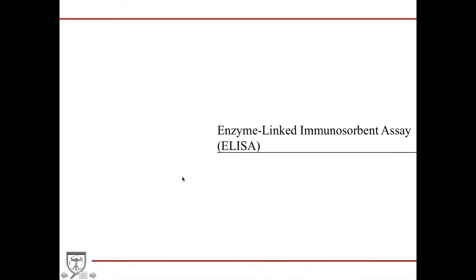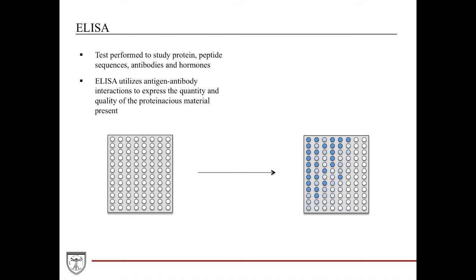The next one I'm going to talk about is enzyme-linked immunosorbent assay or ELISA. This is a very important test because this has a lot of different functions. It's actually used very widely in biochemistry. This test is used to study protein, peptide sequences, antibodies, hormones, pretty much anything that is almost peptide or protein in base. Because it uses the concept of antibodies, antigens, to actually produce these colors that you see here.